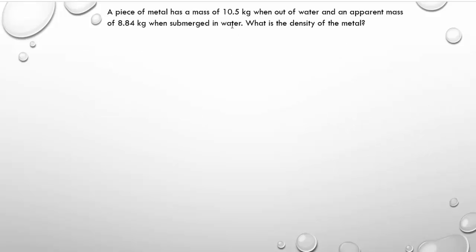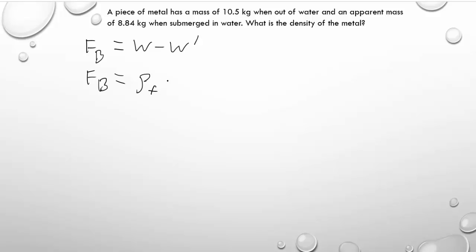Next problem. A piece of metal has a mass of 10.5 kilograms out of the water. You put it in the water and weigh it, and it seems to have less weight. From that, we want to find the density of the metal. We have two different equations to find the buoyant force. One is the difference between the weight in the water and out of the water — those two things times 9.8. The other equation for buoyant force is the density of the fluid times the volume displaced times g.